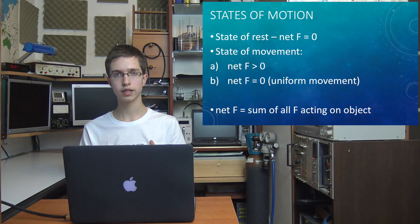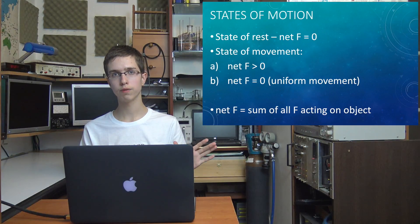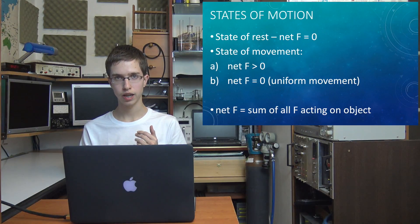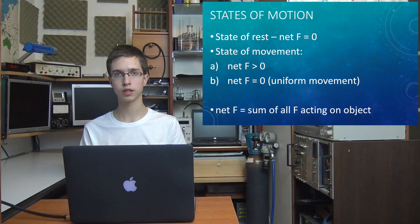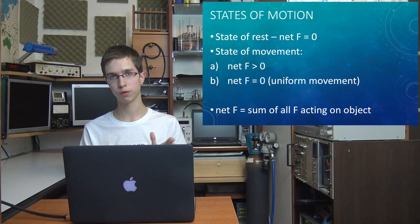If the speed is greater than zero, then the body moves along its trajectory. And if the speed is equal to zero, meaning that net force which is the sum of all forces acting on the object is equal to zero, then the body is in a state of rest or it uniformly moves.